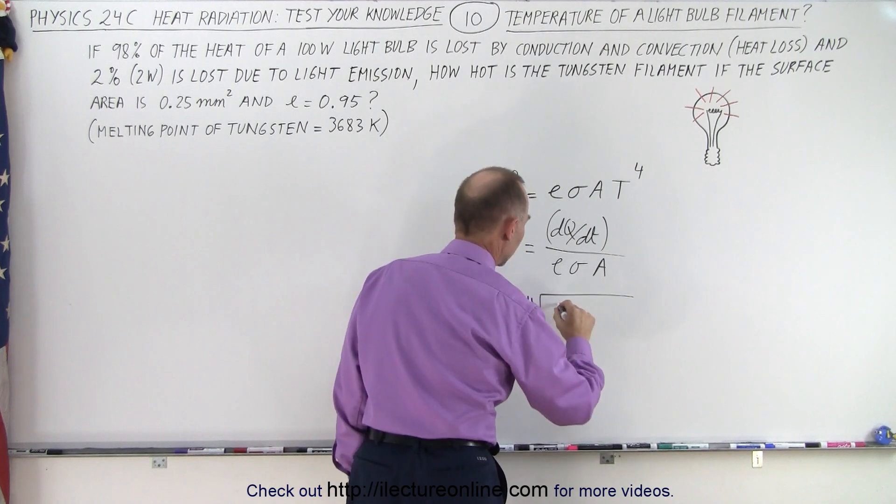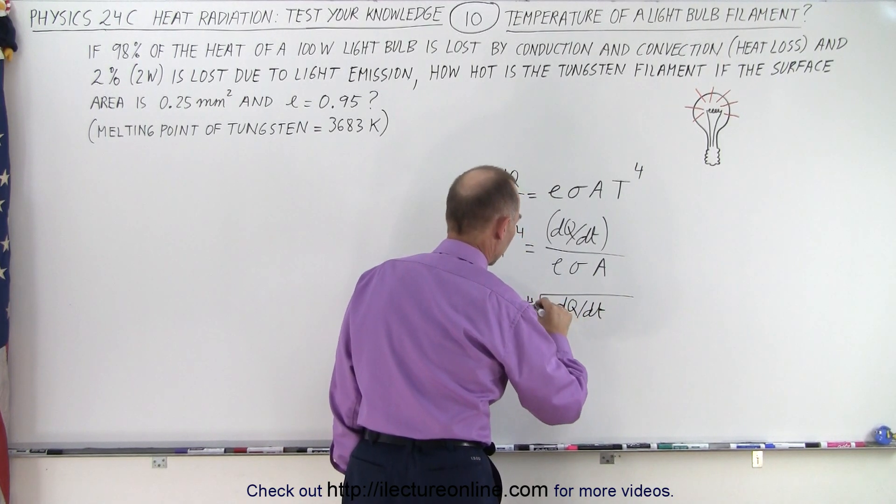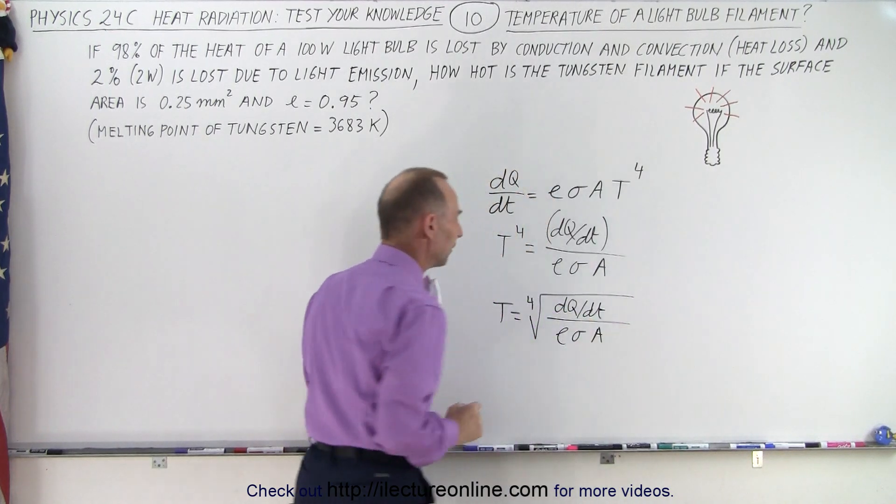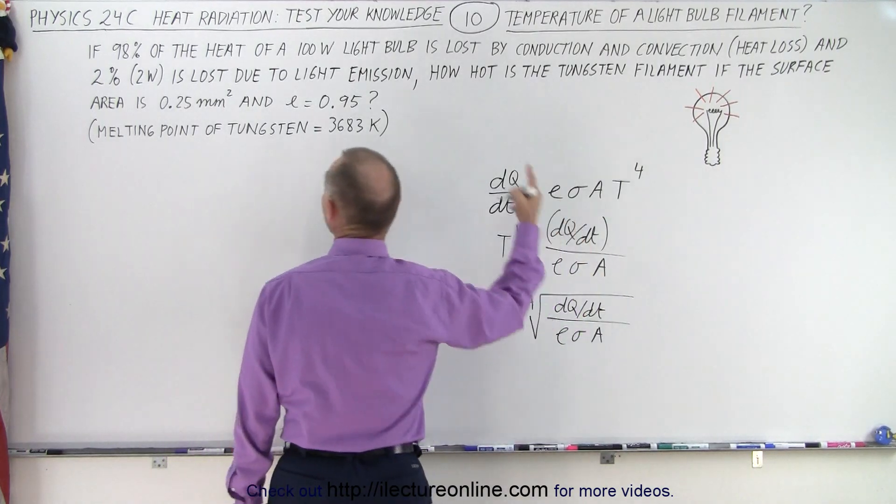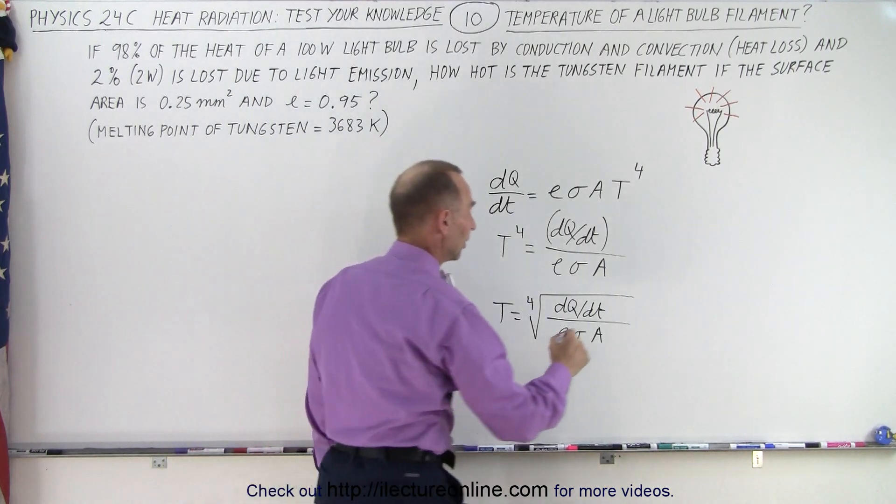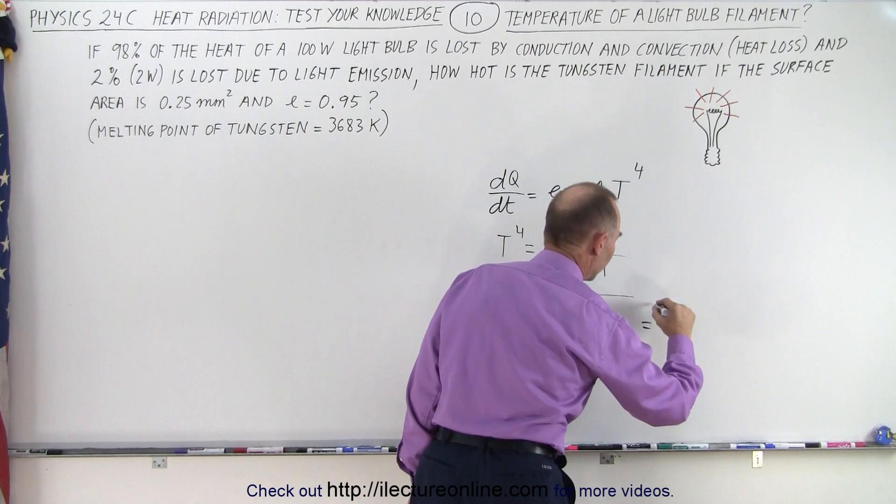We have to be careful with the surface area because we're given it in square millimeters and we're going to have to convert that to square meters. So let's write down what we have. The heat output from the light is 2 watts, so we have the fourth root of 2 watts in the numerator divided by ε, which is 0.95 (that's emissivity).